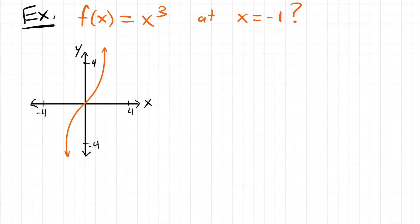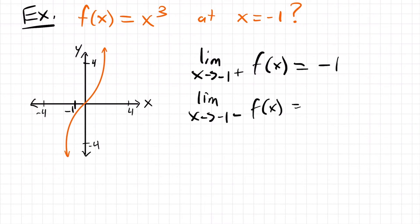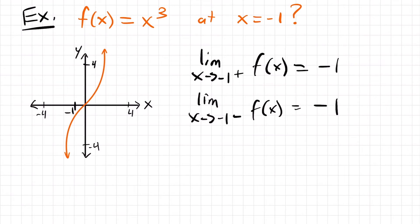Next, we have the function x cubed. And I want to know, is it continuous at the point x equals negative 1? Let's investigate by looking at our graph. We'll look at the limit as x approaches negative 1 from the right and from the left, and see if these are equal. As we get close to x equals negative 1, we're getting to y equals negative 1 from both sides. So the limit from both sides is negative 1, and the actual value of the function at negative 1 is also negative 1. This is a smooth curve, so x cubed is continuous everywhere — from negative infinity to infinity along the real line.